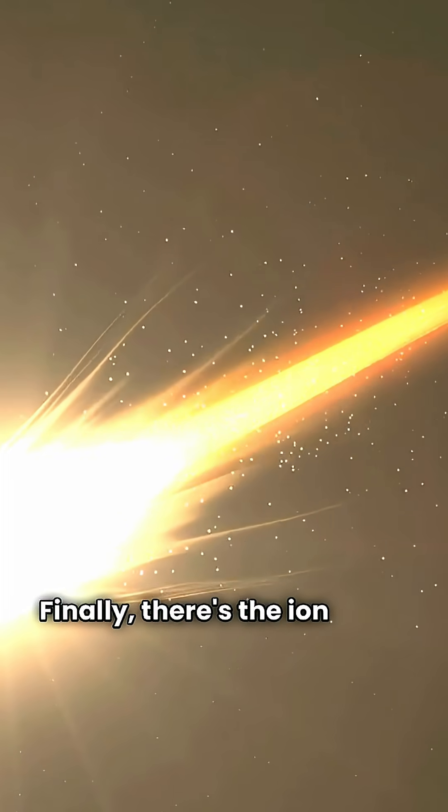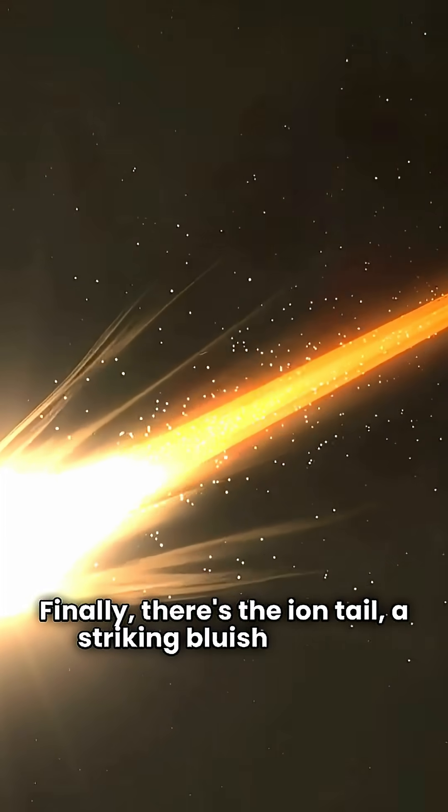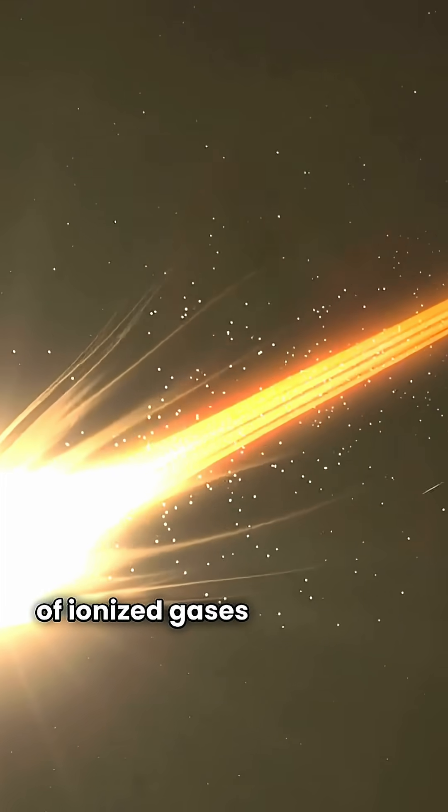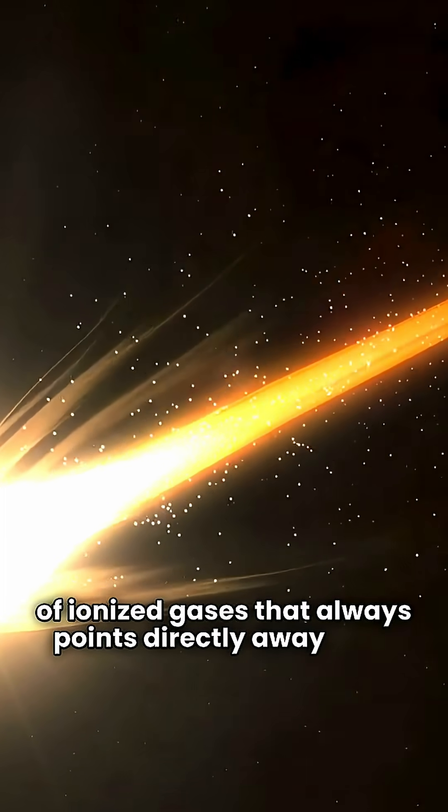Finally, there's the ion tail, a striking, bluish stream of ionized gases that always points directly away from the sun, shaped by the solar wind.